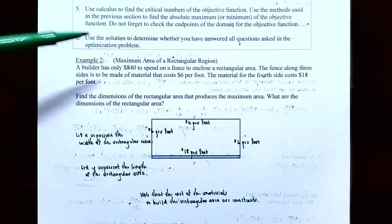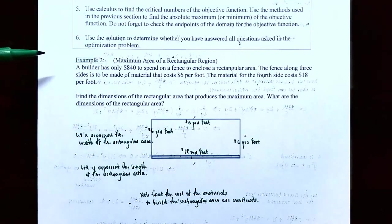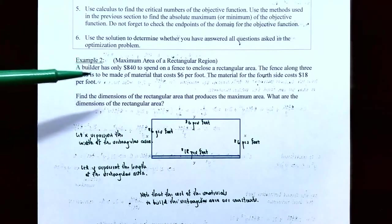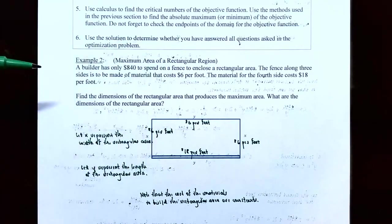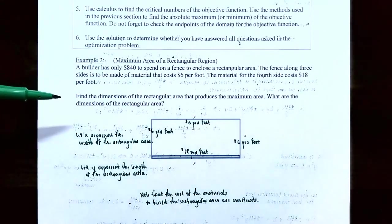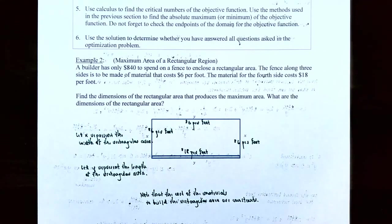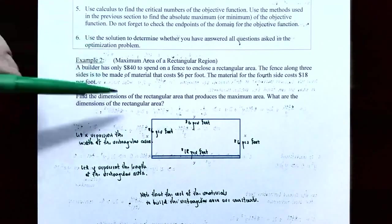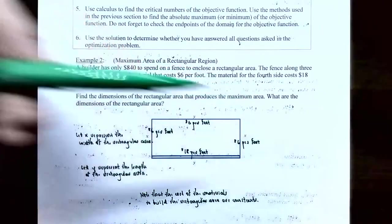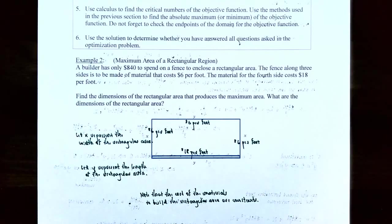Let's try Example Two: Maximum area of a rectangular region. A builder has only $840 to spend on a fence to enclose a rectangular area. The fence along three sides costs $6 per foot, and the fourth side costs $18 per foot. Find the dimensions of the rectangular area that produces the maximum area.